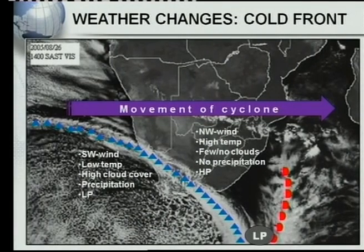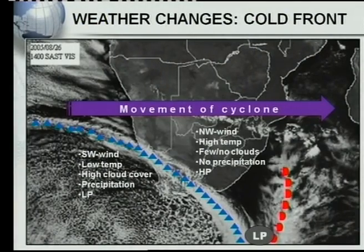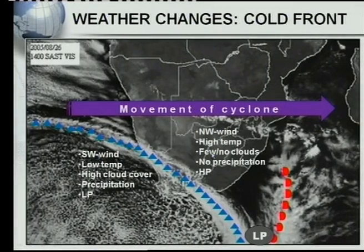To summarize the weather changes that take place when a cold front moves over an area: firstly, the wind changes from northwest to southwest — the reason is the clockwise rotation around a low-pressure system. Second, the temperature drops — high temperature in front, low temperature behind — because the cold air mass always lies behind your cold front. You must know why, not just the changes. Third, few or no clouds in front of the cold front, and high cloud cover behind — because when fronts are present, we get rising air, condensation, clouds form, and precipitation takes place. You must know your weather changes that take place when a cold front passes.